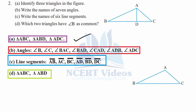Continuing the seven angles: we also have angle ADB and angle ADC. In total, that gives us 1, 2, 3, 4, 5, 6, 7 — seven angles in triangle ABC.